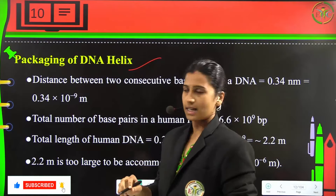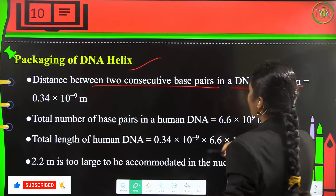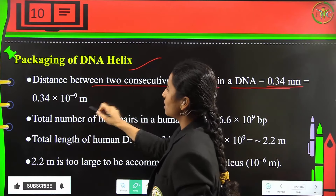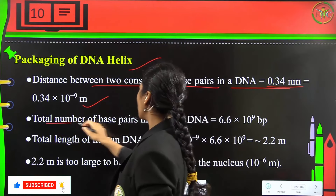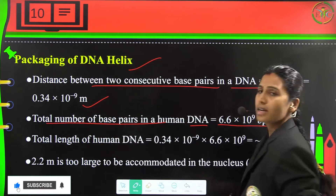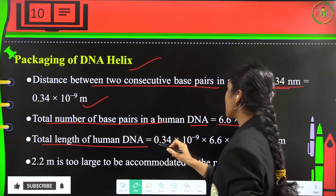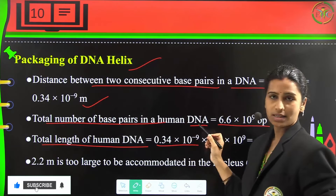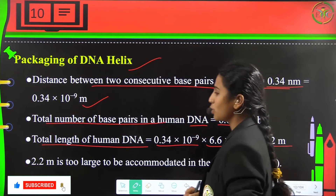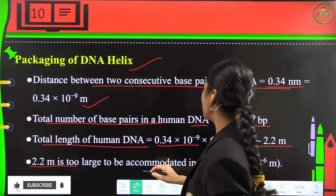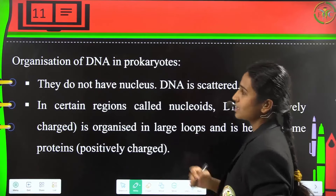Packing of the DNA helix: the distance between two consecutive base pairs in DNA is 0.34 nanometers. The total number of base pairs in human DNA is 6.6 × 10⁹ base pairs, and the total length of human DNA is approximately 2.2 meters — far too large to be accommodated in the nucleus, which is of the order of 10⁻⁶ meters.